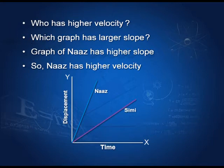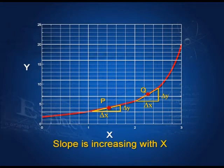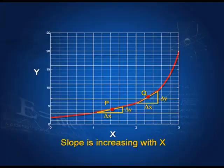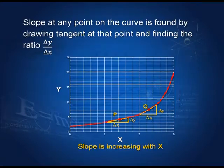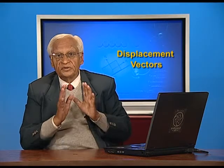In the last slide we used straight lines, but the displacement-time graph is not always a straight line — it can be a curved line. Here I have a curved x-y graph, simply to show that the slope is changing. How do you find the slope? At point Q, for example, draw a tangent to the curve, then draw delta y and delta x. Delta y by delta x gives the slope at that point. You can see that the slope at P is smaller than the slope at Q, meaning the slope in this graph is increasing.